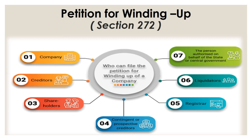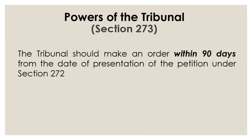Next is petition for winding up. A petition for winding up can be given by the following persons: the company, creditors, shareholders or contributories, contingent or prospective creditors, registrar, liquidators, and the person authorized on behalf of the state or central government. This is mentioned under section 272.